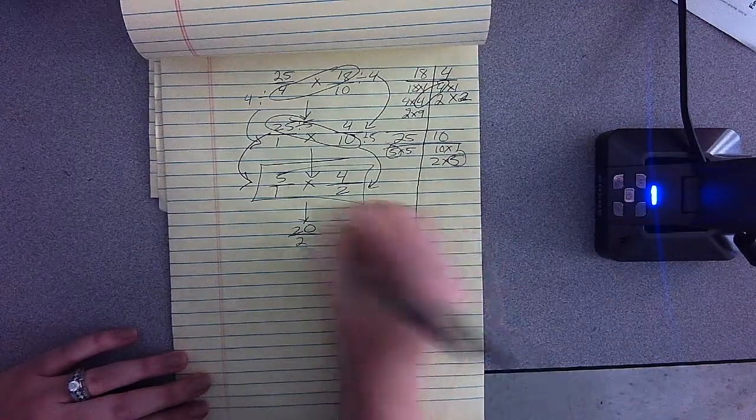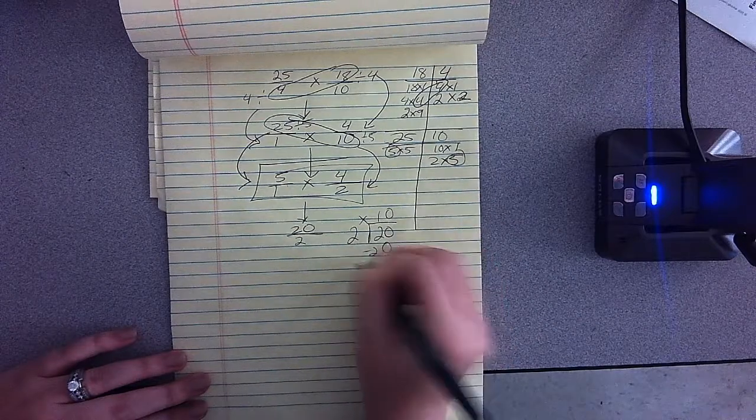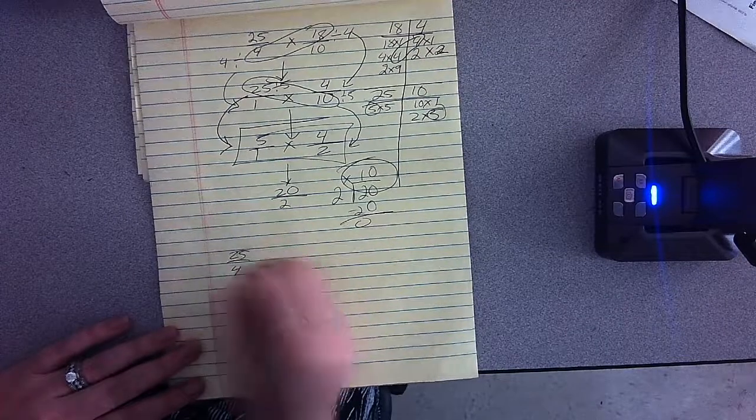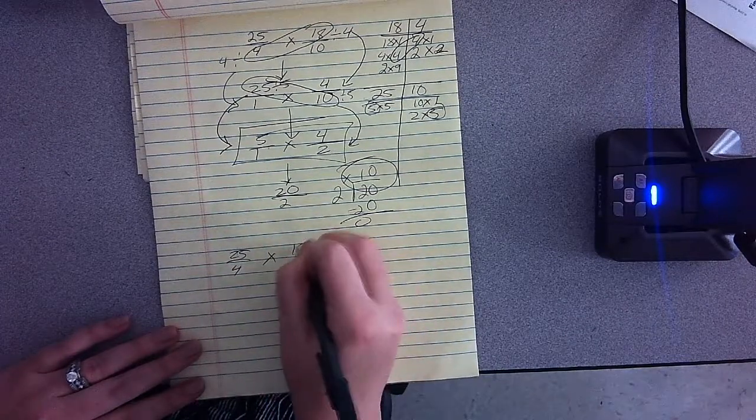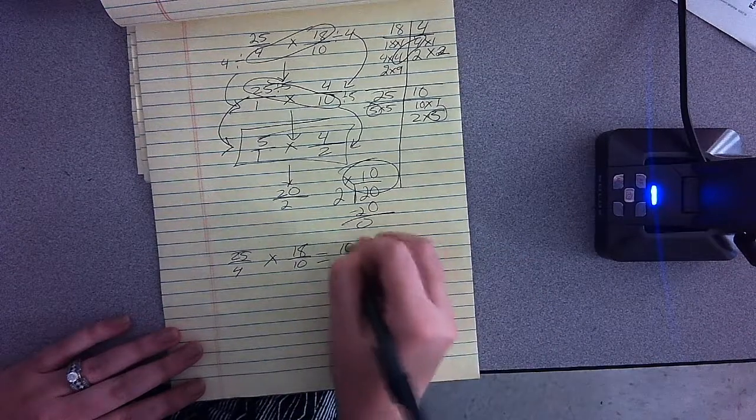So 20 divided by two, two times 10 gets you 20, and that cancels out. So that is your answer. So 25 over four multiplied by 18 tenths or 18 over 10 is 10.